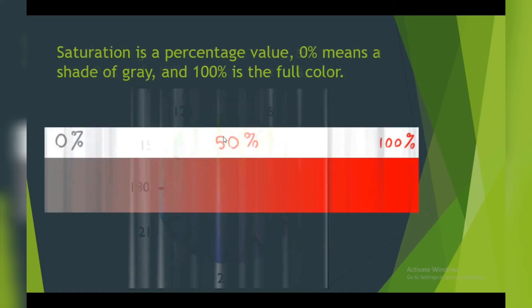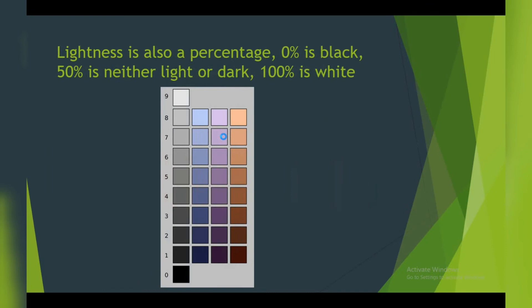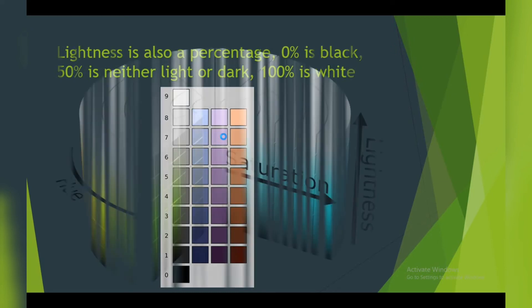Second is the saturation. Saturation is a percentage value. Zero percent means a shade of gray, and 100 percent is full color as shown in the picture. Third is lightness. Lightness is also a percentage. Zero percent is black, 50 percent is neither light or dark, and 100 percent is complete white.